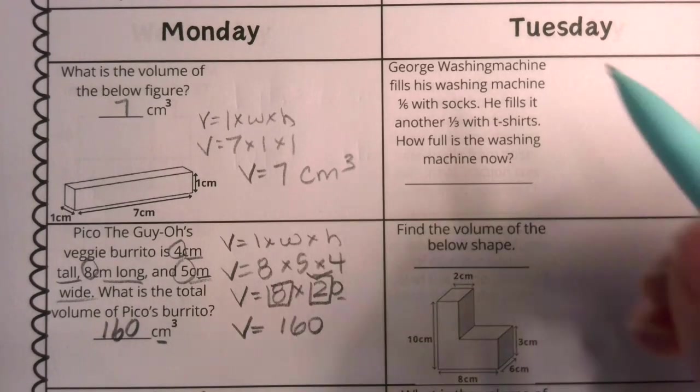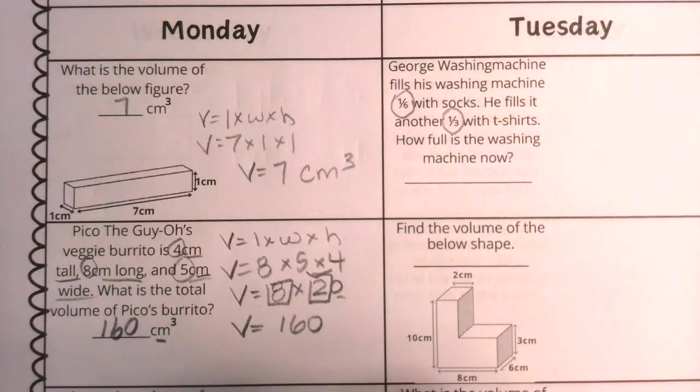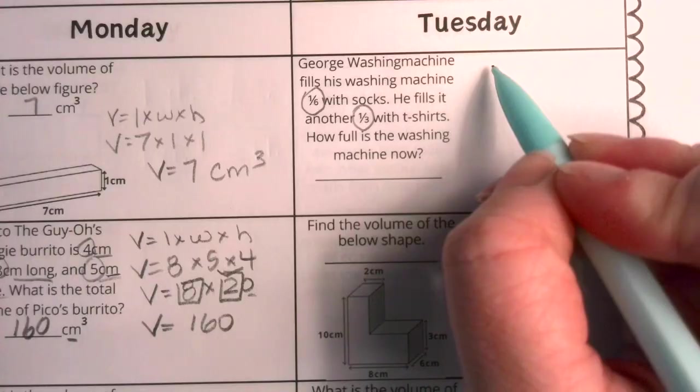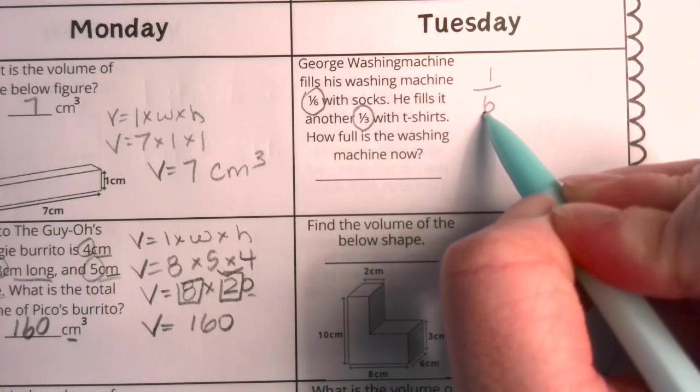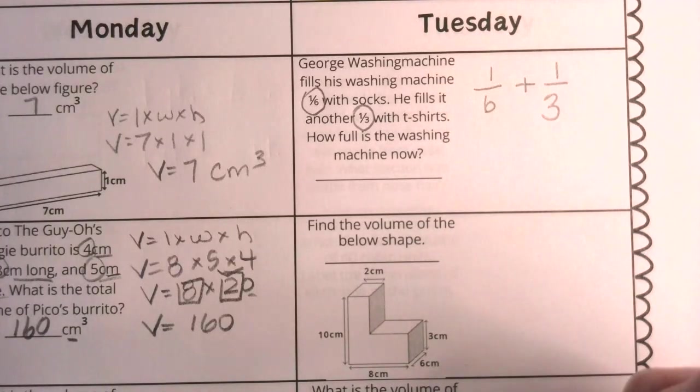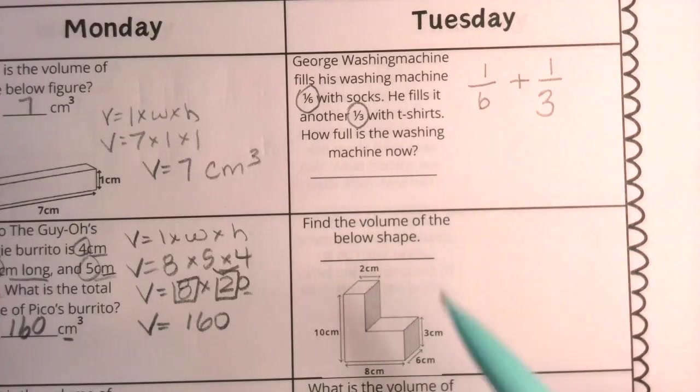Let's take a look at our numbers. Here I see one-sixth. Here I see one-third. I have to decide what the operation is that I should do with these fractions, and indeed, I find that I should add them. I'm going to take the one-sixth that is full of socks and the one-third that is full of t-shirts and add those together. But I know that I can't add these quantities when their denominators are not the same.